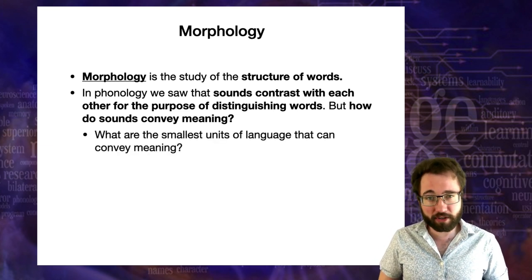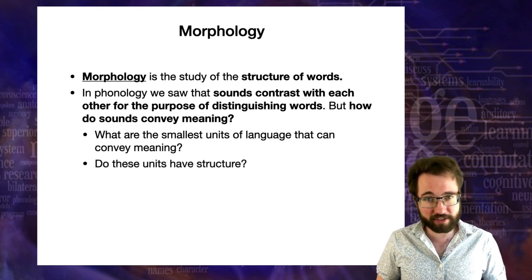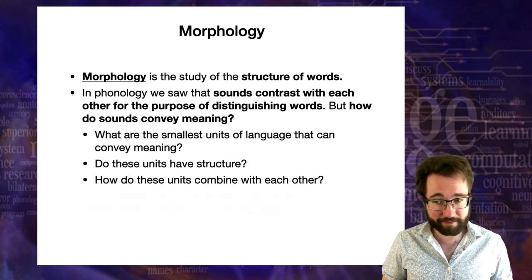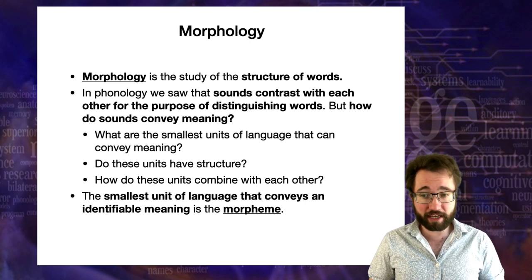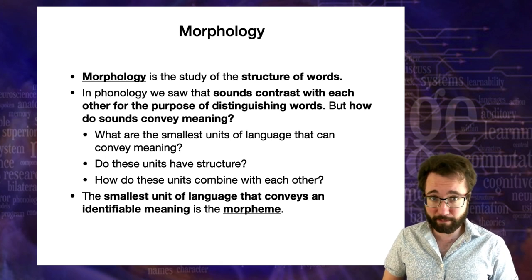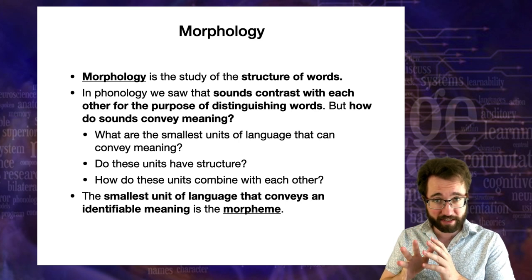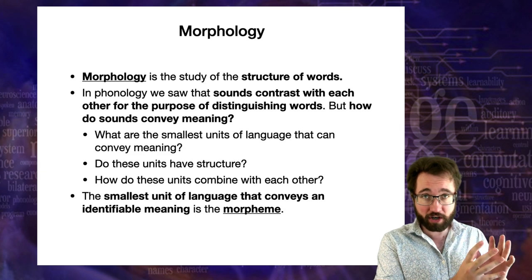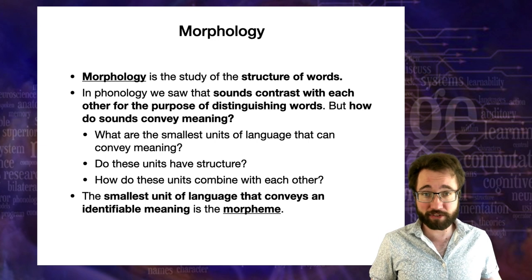What are the smallest units of language that can convey meaning? Do these units have structure? How do these units combine with one another? We're going to see that the smallest unit of language that conveys an identifiable meaning is something called a morpheme. In phonology, we talked about phonemes, which are units of sound. In morphology, we'll talk about morphemes, which are units of sound-meaning combination.